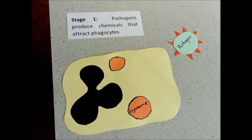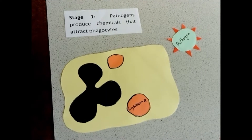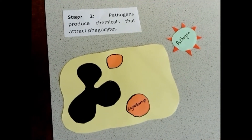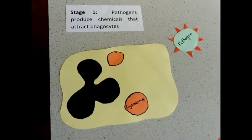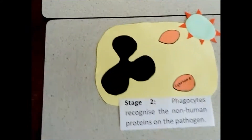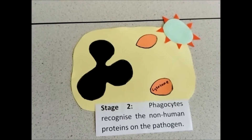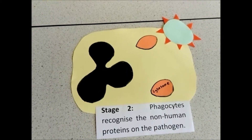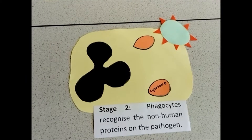Phagocytosis starts with a phagocyte being attracted to a pathogen. The pathogen produces small chemicals which attract the phagocytes to it. The second stage is that the pathogen is taken into the phagocyte by endocytosis.